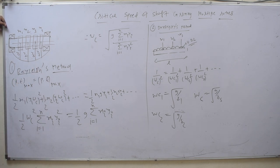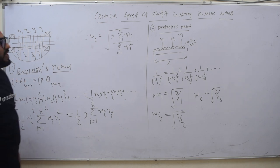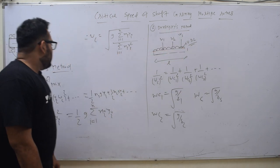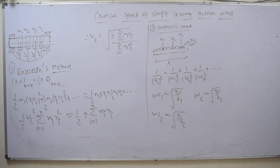So now you have the critical speed of shaft when you have multiple rotors. There are two ways: one is the Rayleigh's method and second is the Dunkerley's method. According to the Rayleigh's method, maximum kinetic energy is equal to maximum potential energy.